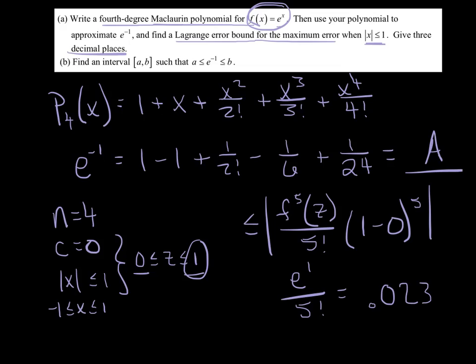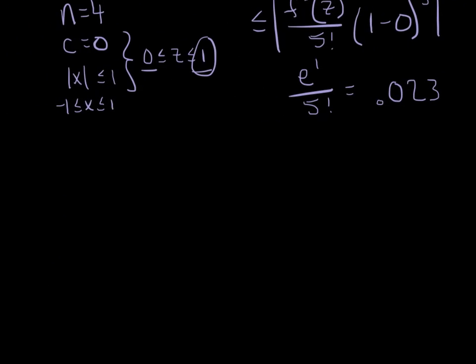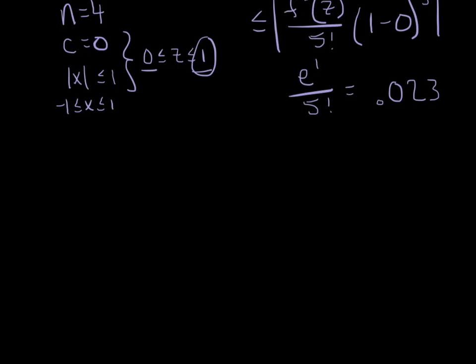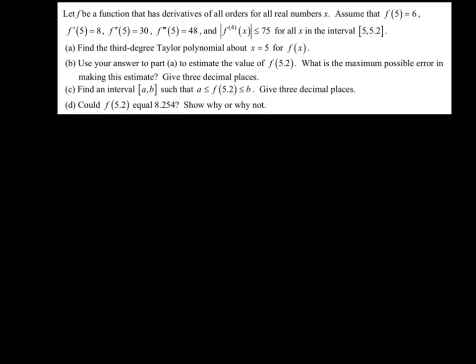We haven't talked about part B yet. They said give an interval such that e to the negative 1 is guaranteed to lie within. So I said e to the negative 1, because my error could go in either direction, my approximation could be a little low or a little high, so e to the negative 1 is somewhere in between. I'm going to say alpha A plus my maximum error or alpha A minus my maximum error. Whatever those values turn out to be is the interval within which e to the negative 1 has to fall.